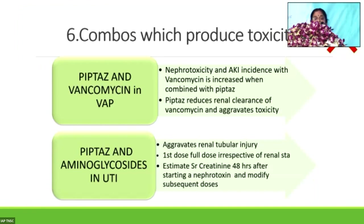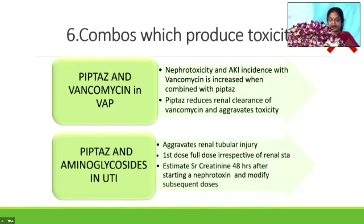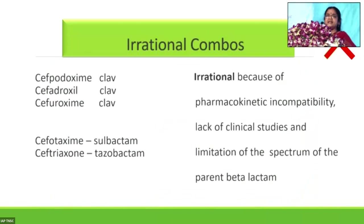Pip-taz plus vancomycin in ventilator-associated pneumonia — the nephrotoxicity and AKI incidence with vancomycin is greatly increased with pip-taz; avoid this combination. Pip-taz plus aminoglycosides — called double gram-negative coverage in UTI — should also be avoided due to nephrotoxicity. Whenever you are worried about nephrotoxicity, give the first dose at full dose irrespective of renal status, then estimate serum creatinine 48 hours after starting a nephrotoxic drug and modify subsequent doses accordingly.